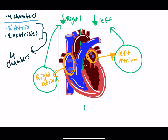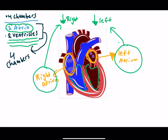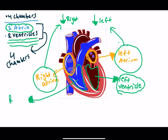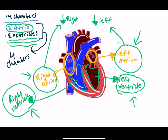Now let's talk about where the two ventricles of your heart are located. The two ventricles are located here and here. This ventricle is called your left ventricle because it's on the left side of your heart, and this ventricle is called your right ventricle. Together, the right atrium, left atrium, left ventricle, and right ventricle make up the four chambers of your heart.